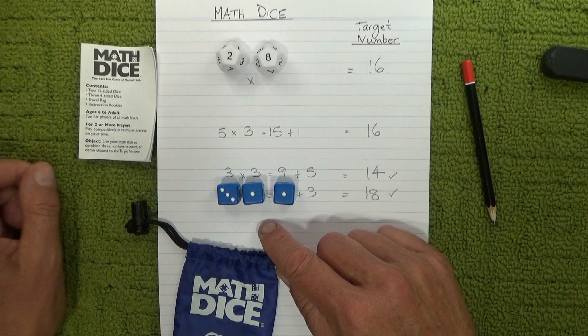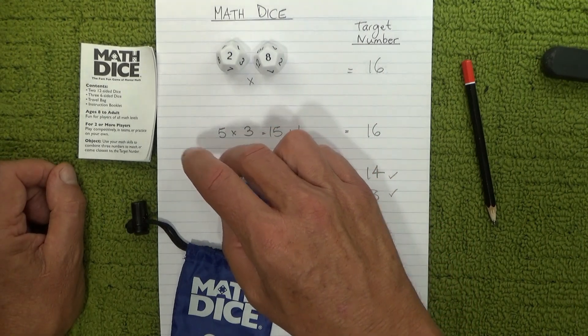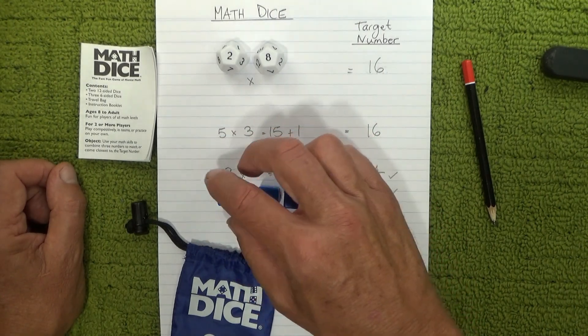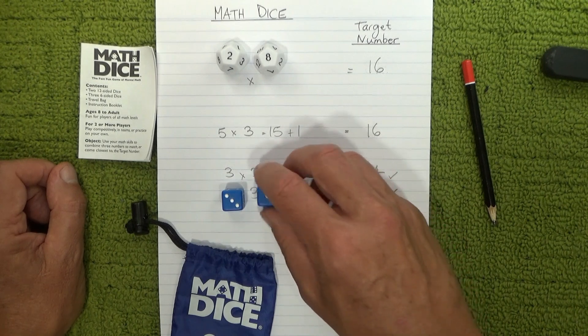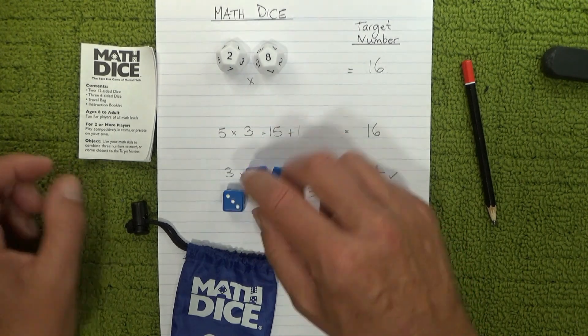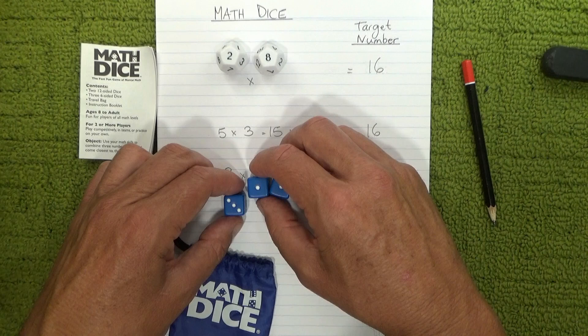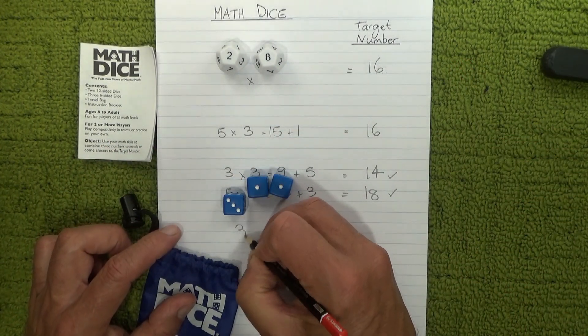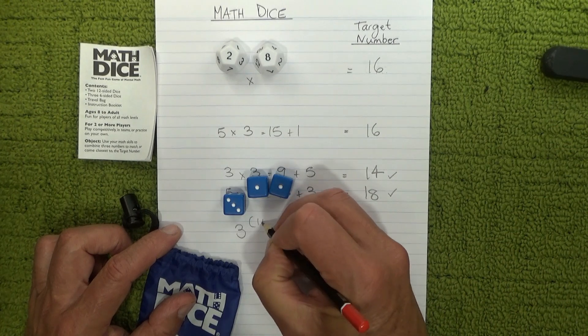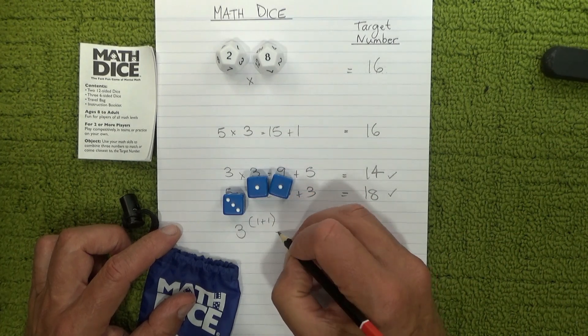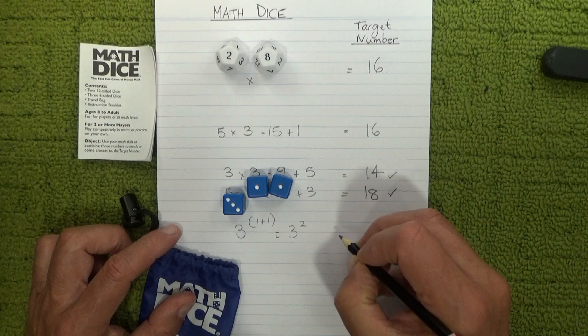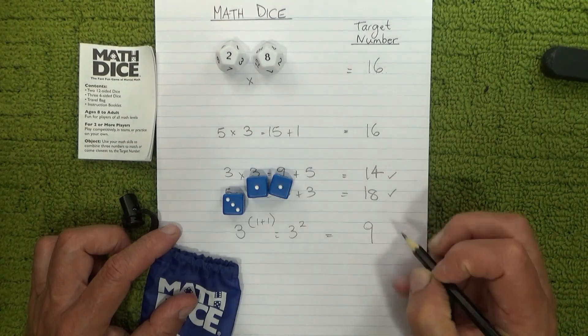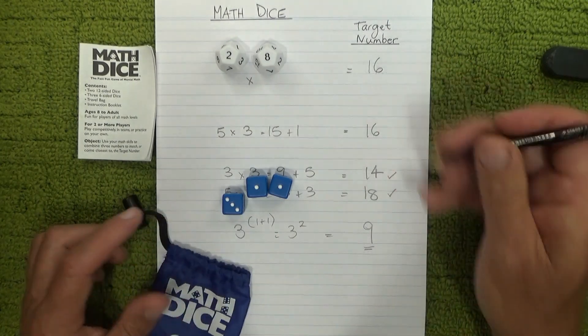But let's see what gets the closest. One plus one is two, two to the power of, or three squared is nine, which is probably going to be the closest. One plus one is the same as three squared, which is nine. I think that might be the closest there to 16.